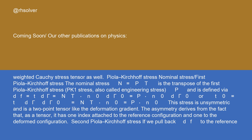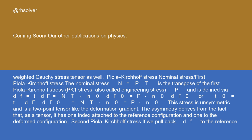This stress is unsymmetric and is a two-point tensor, like the deformation gradient. The asymmetry derives from the fact that, as a tensor, it has one index attached to the reference configuration and one to the deformed configuration. For the second Piola-Kirchhoff stress: if we pull back dF to the reference configuration, we obtain the traction acting on that surface before the deformation, dF-zero, assuming it behaves like a generic vector belonging to the deformation. We have dF-zero equals F-inverse dF, and dF-zero equals F-inverse N-transpose N-zero d-gamma-zero equals F-inverse T-zero d-gamma-zero.